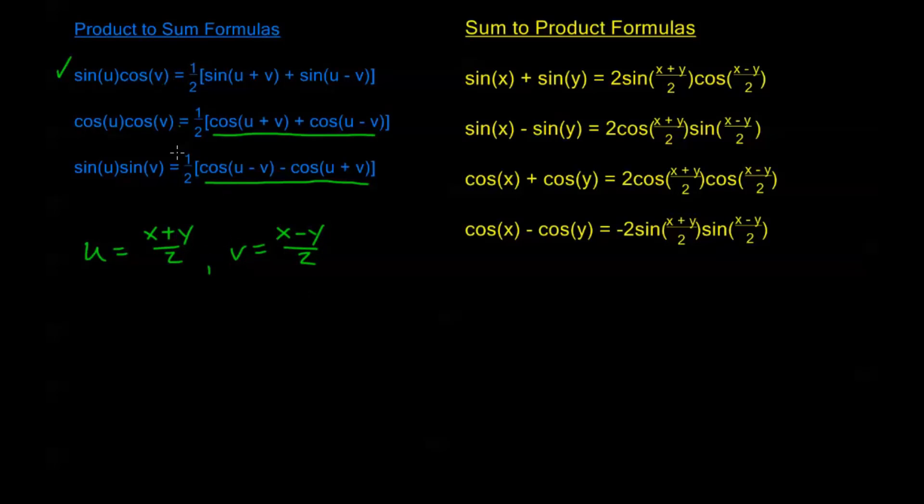Well, plugging these substitutions into my first product-to-sum, I get that sine of x plus y over 2 times cosine of x minus y over 2 is equal to 1 half sine of u plus v. So let's take a look at u and v. u plus v is x plus y plus x minus y all over 2. So this just turns into, I have a cancellation. My plus y and minus y over 2 cancel, and I have x over 2 plus x over 2, which is 2x over 2, which is just x.